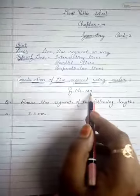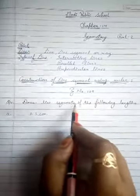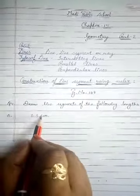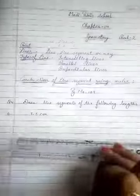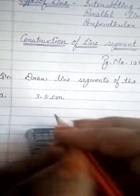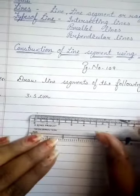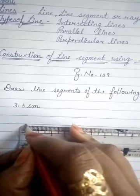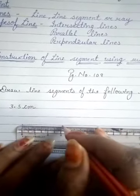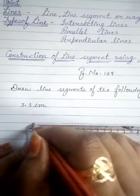Page number 109 — question number 4 says: draw line segments of the following lengths. The length given is 3.5 centimetres. So here we will take our ruler. You can see this is 0, so we will first mark our point here. We will place this 0 at that point, and then we will take it to 3 — here it is 3 centimetres. So we will draw it first to 3.